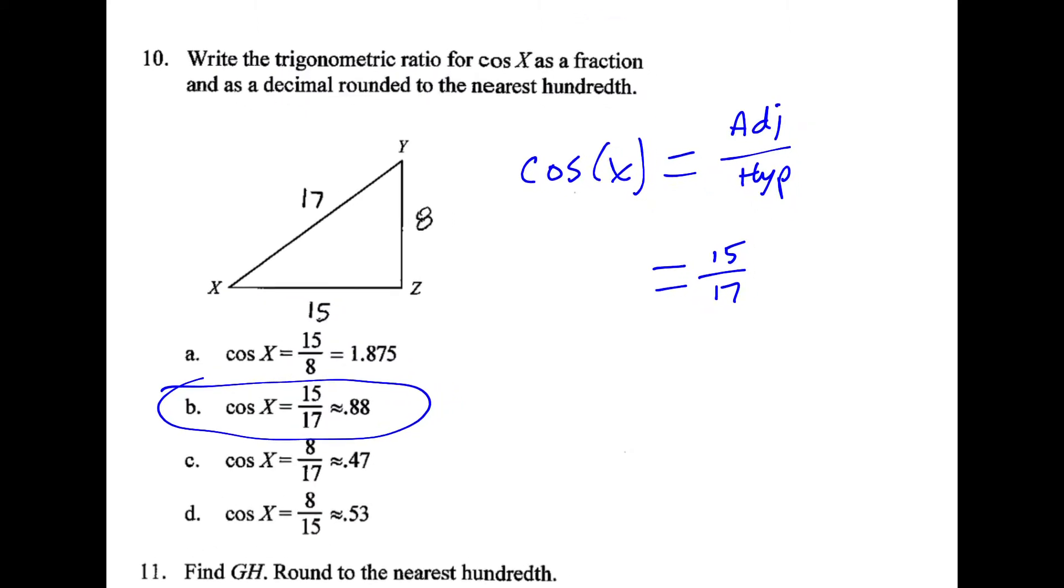For 10, SOHCAHTOA, the cosine is equal to adjacent over hypotenuse. In this case, 15 over 17.